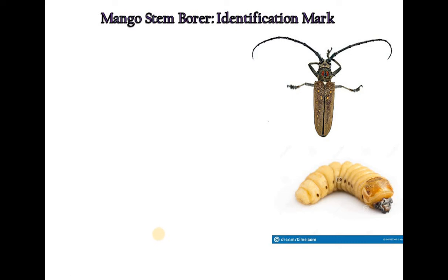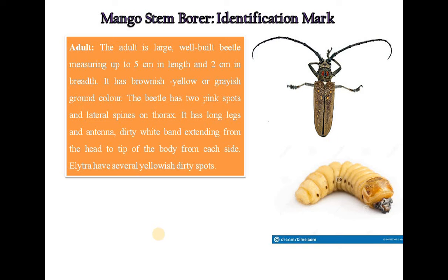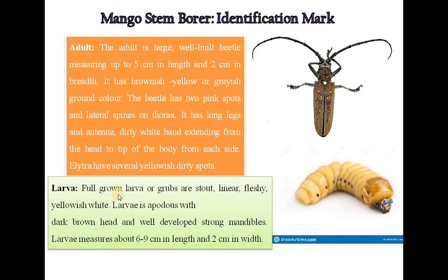The main identification marks of the mango stem borer: the adult is a large, well-built beetle measuring up to 5 cm in length and 2 cm in breadth, with a brownish-yellow or greyish ground color. The beetle has two pink spots and lateral spines on the thorax, long legs and antennae, and a dirty white band extending from the head to the tip of the body on each side. Elytra have several yellowish-dirty spots. Full-grown larvae, called grubs, are stout, linear, fleshy, and yellowish-white, with a dark brown head and well-developed strong mandibles, measuring about 6 to 9 cm in length and 2 cm in width.